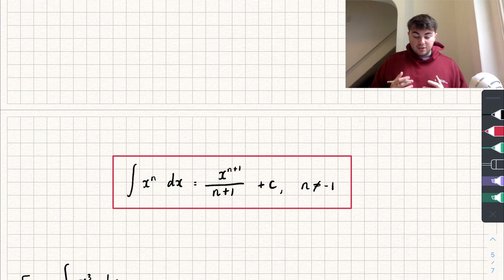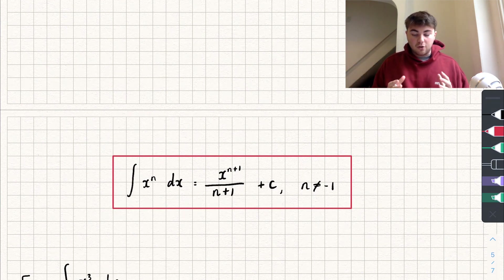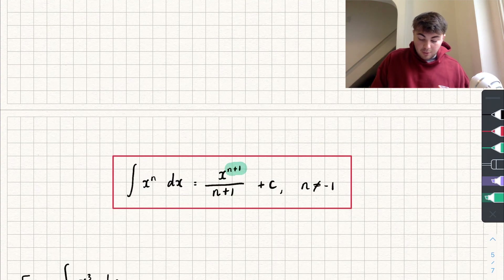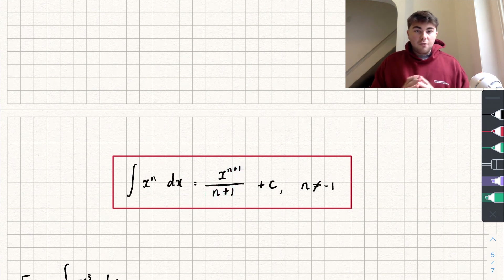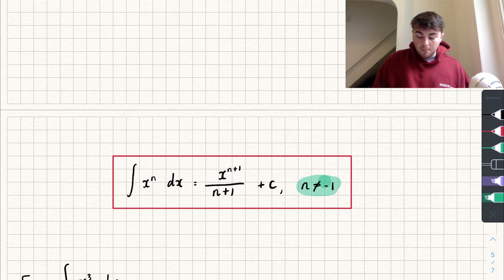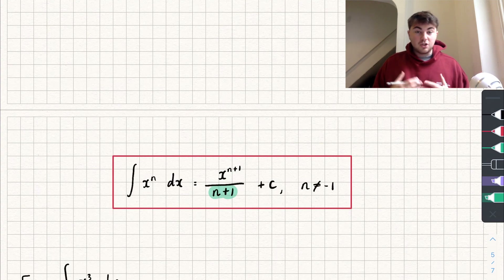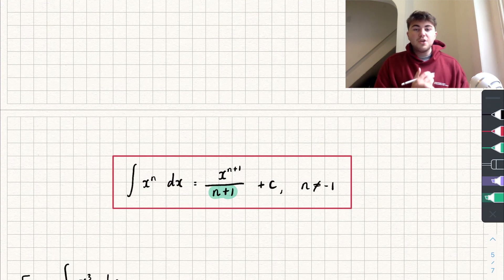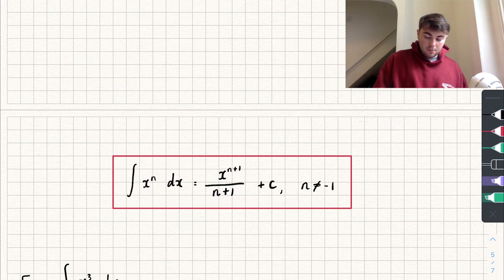Here's the generic rule for integration: for a function x to the power of n, we add one to the power to get x to the n+1, then divide by the new power n+1. This works for pretty much any basic function unless n equals negative one, because then we'd be dividing by zero, which we can't do. Functions where n equals negative one need to be integrated a different way, which we'll look at in a later video.